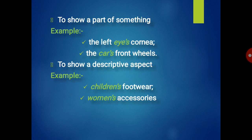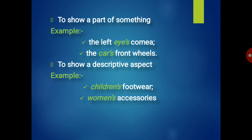Next, we use the possessive form to show a descriptive aspect. For example, children's footwear and women's accessories. Here, we are relating footwear to children and accessories to women. So we use the possessive form of a noun to show a descriptive aspect.